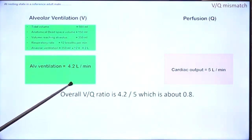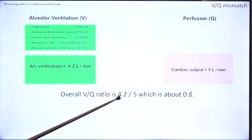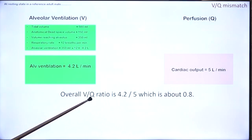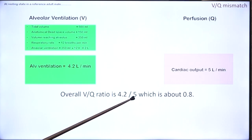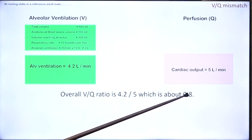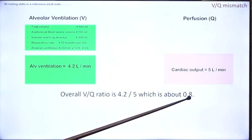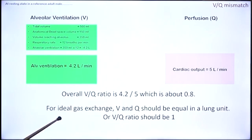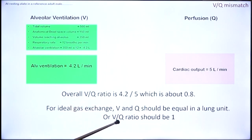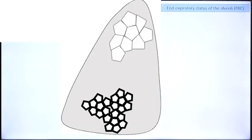The overall VQ ratio — total ventilation perfusion ratio — is 4.2 by 5, which is about 0.8. Remember, the respiratory quotient is also 0.8; that is purely incidental. VQ ratio is also 0.8. For ideal gas exchange it is good to have a VQ ratio of 1, not just total VQ ratio but regional VQ ratios.